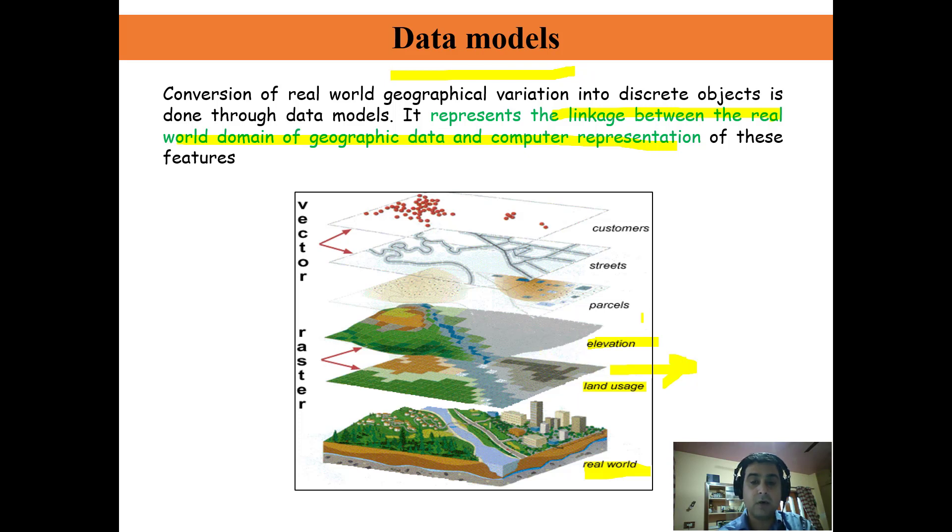Now from the raster data, when we define areas like forest area, agriculture area in the form of X and Y, set of X and Y, we call that vector data. And we take out streets from that area, which is also vector data.